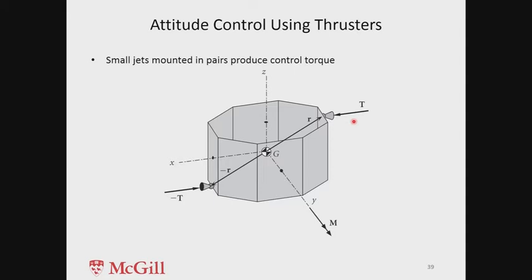Usually you will not have just one pair of thrusters. One pair gives rise to a torque about the z-axis, but you also need control torques about the x-axis and y-axis. So you will have to have three pairs of thrusters — you may even have redundant pairs — but at least three pairs are necessary for three-axis control.